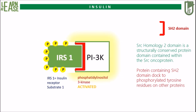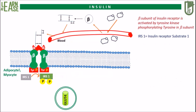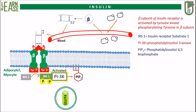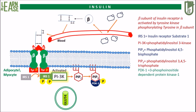The activated PI3K will act on phosphatidylinositol-4,5-bisphosphate and phosphorylates it. This will cause its conversion to phosphatidylinositol-3,4,5-trisphosphate, abbreviated as PIP3. Another enzyme, 3-phosphoinositide dependent protein kinase 1, abbreviated as PDK1, will bind to PIP3 and get activated.